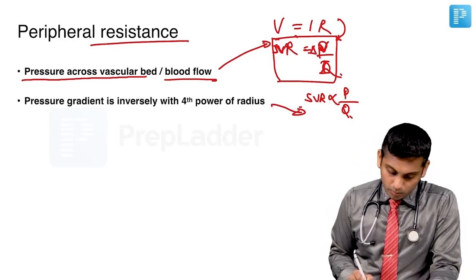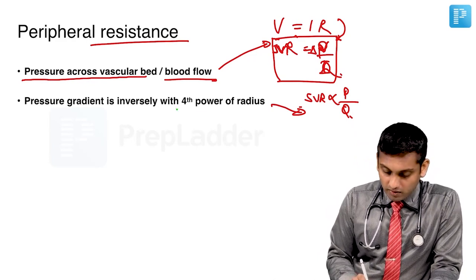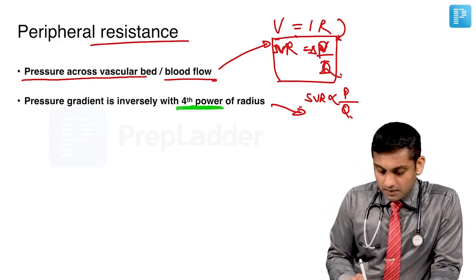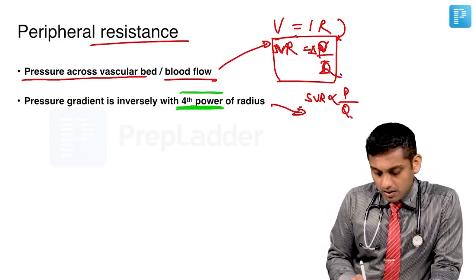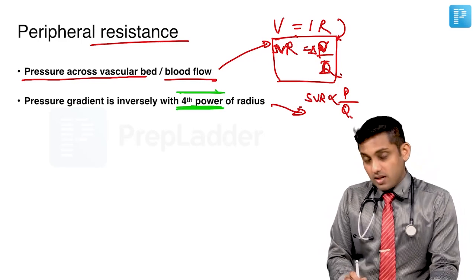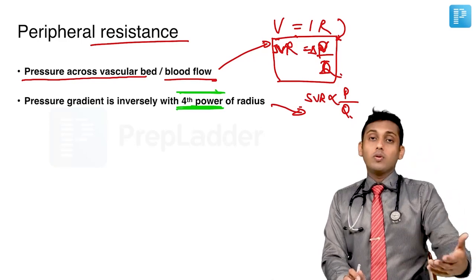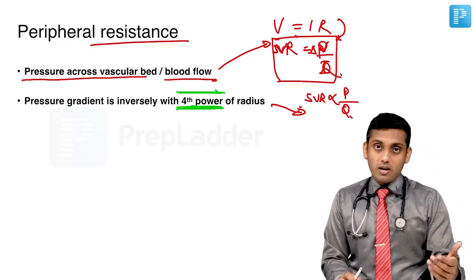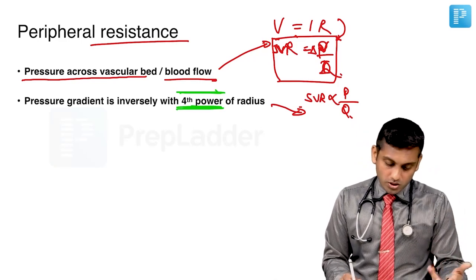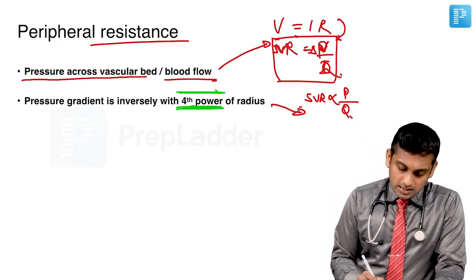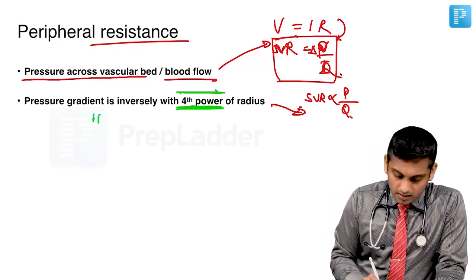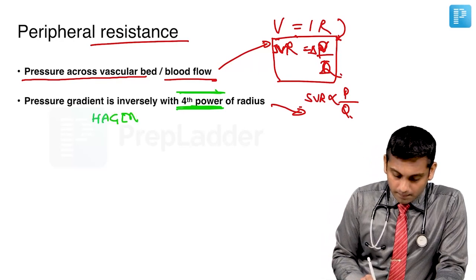The pressure gradient is inversely proportional with the fourth power of radius. This can be an MCQ if they ask you whether it is the cube, square, or direct proportion to the radius. This is nothing but the Hagen-Poiseuille's law.